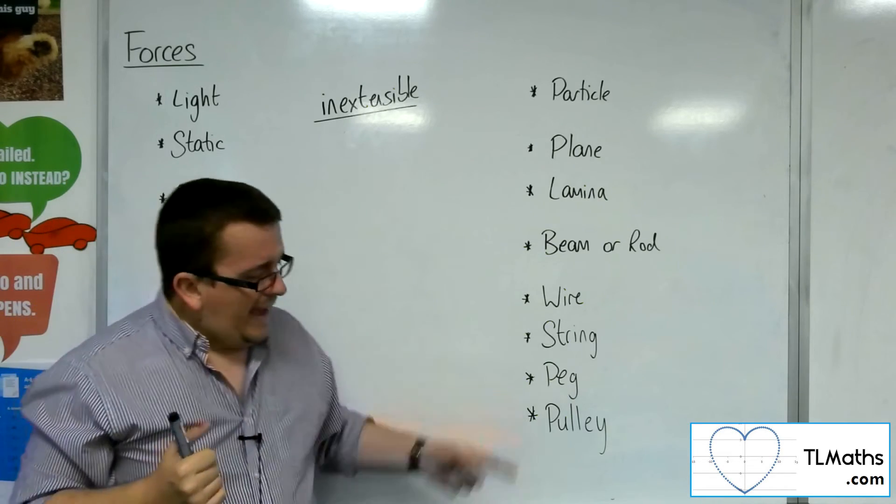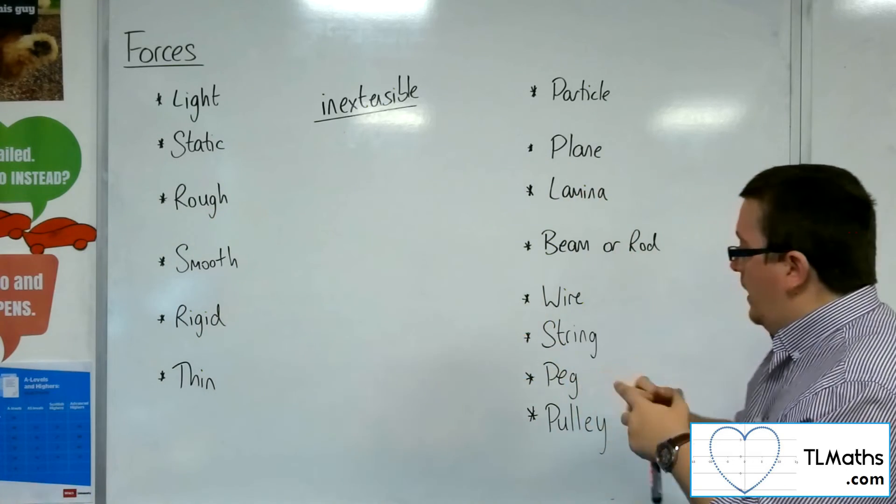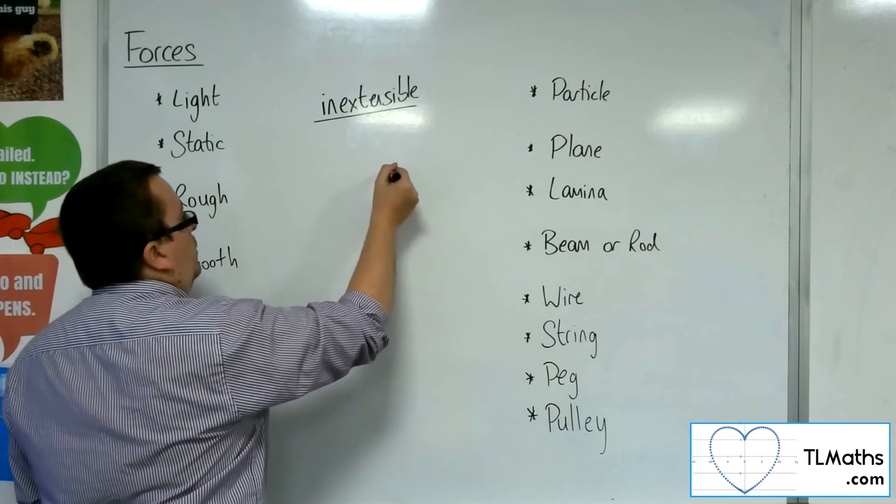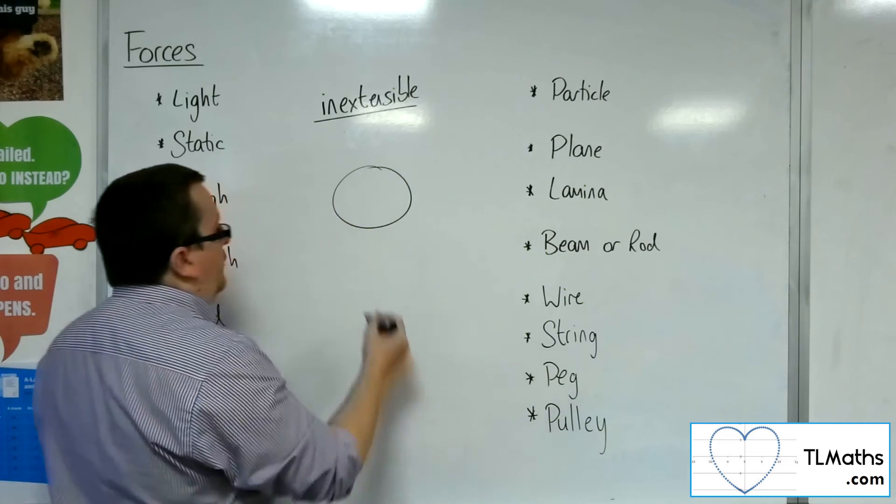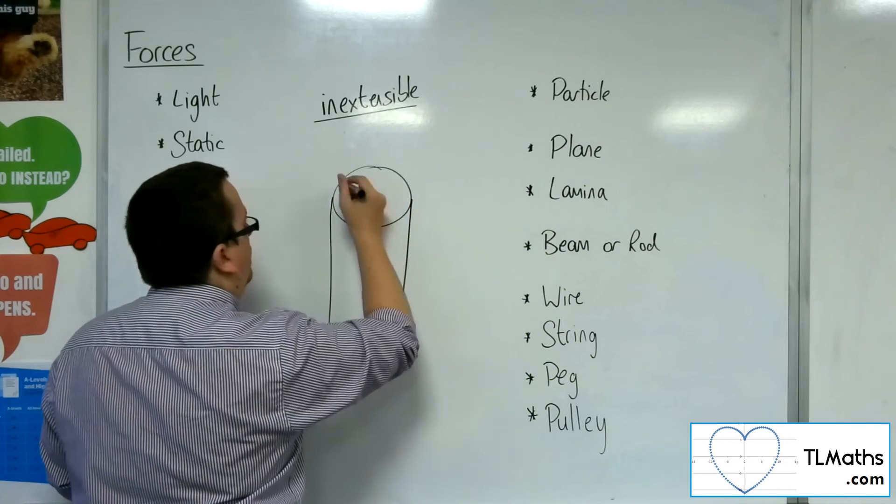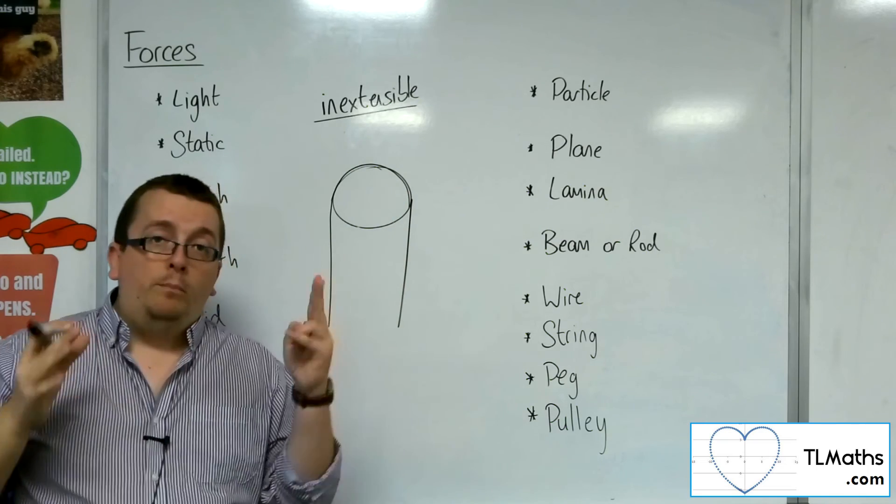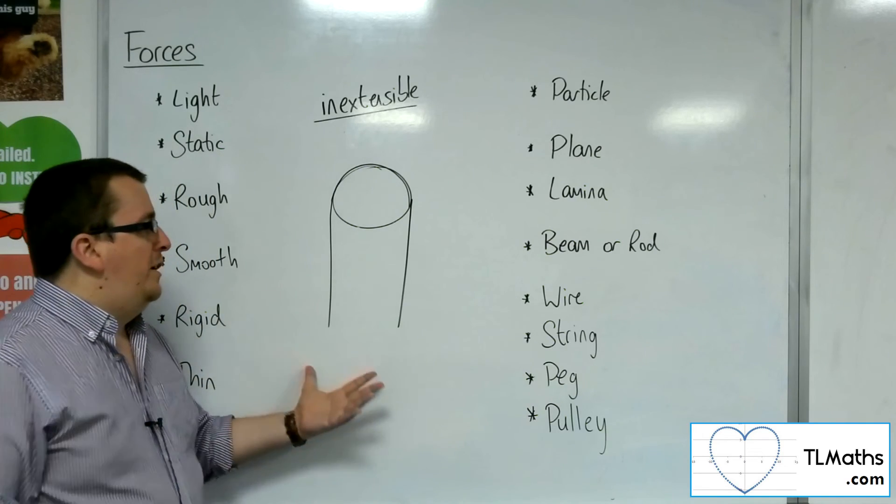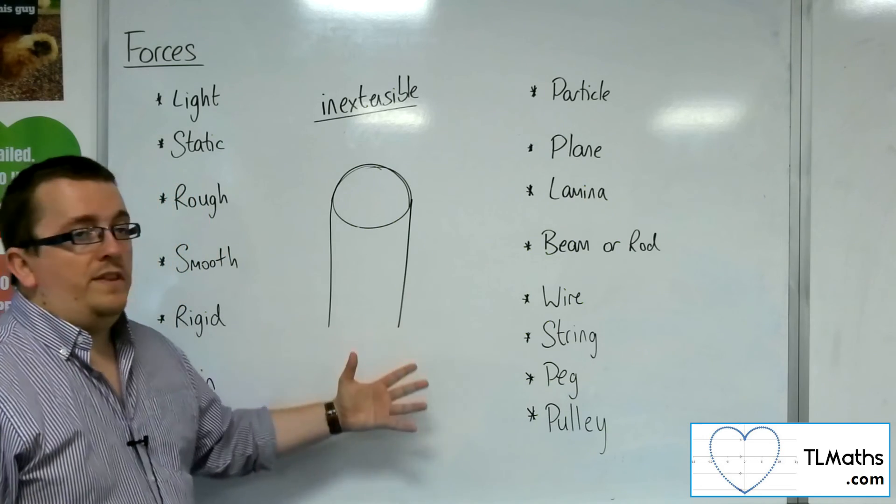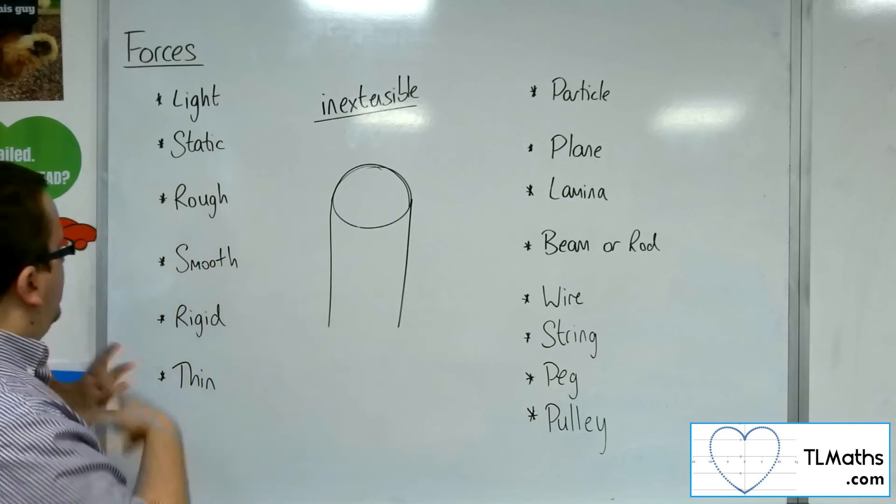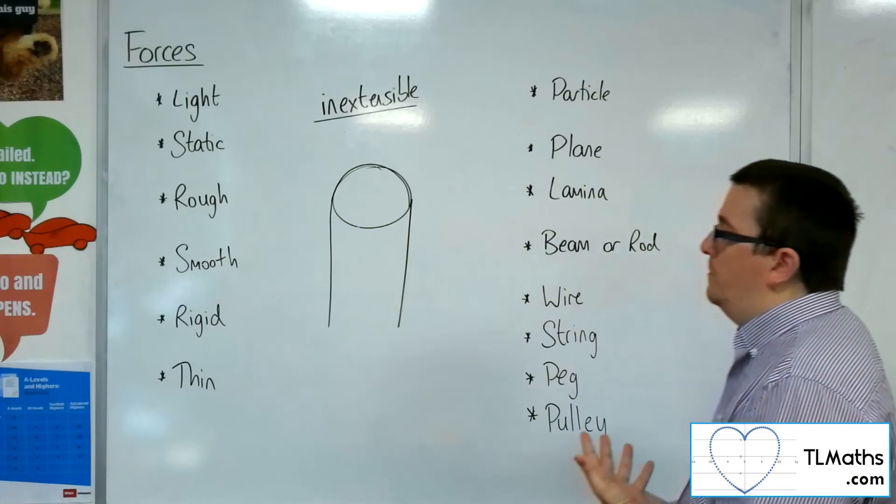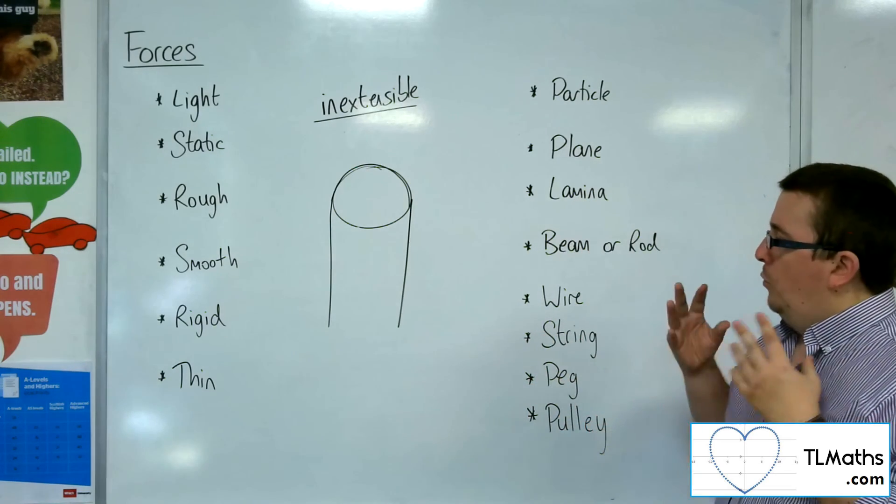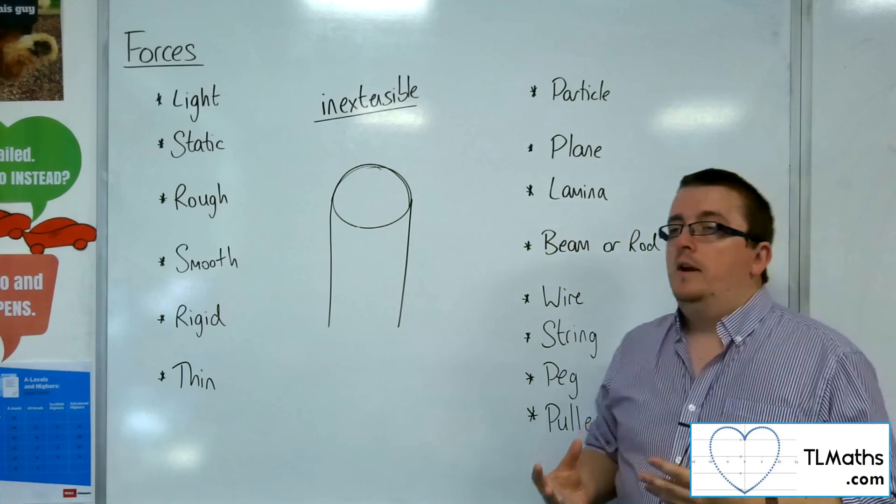Now, a peg is a fixed support, so something that you can rest something on or hang something from, whereas a pulley is a smooth disc, effectively, where you can have the string wrapped around the pulley. We'll be looking at pulley problems later on in this section on forces, where we're going to be looking at how particles behave if one's heavier than the other, what's going to happen to the system. So all of these different words that you're seeing here can be incorporated into the mechanics problems that we deal with in this section. You just need to understand what they mean when they pop up. What can you infer from the problem if you're given that information?